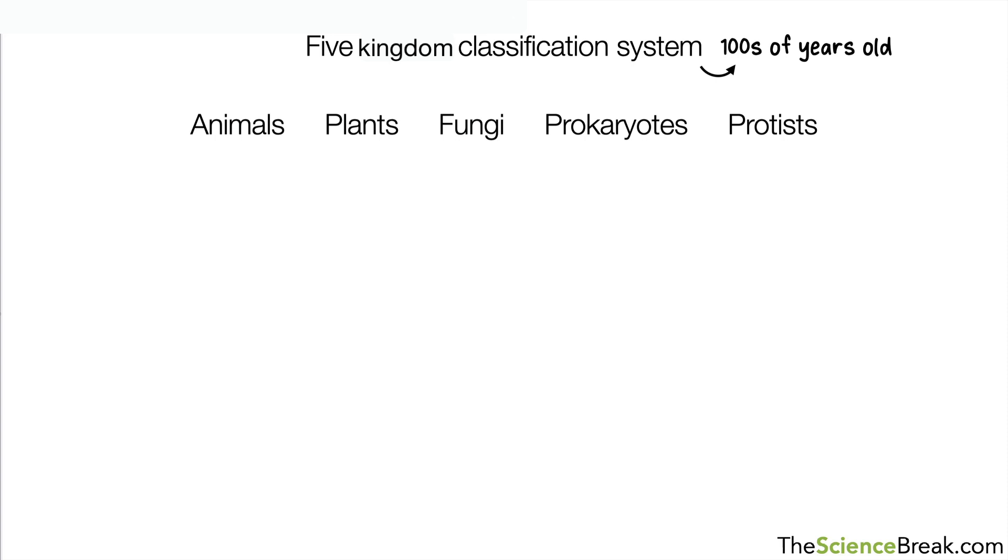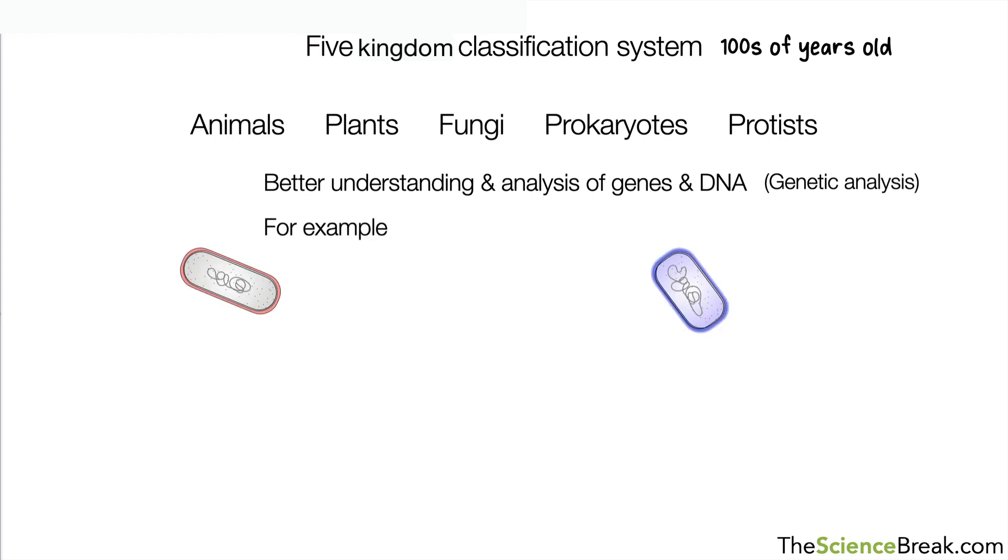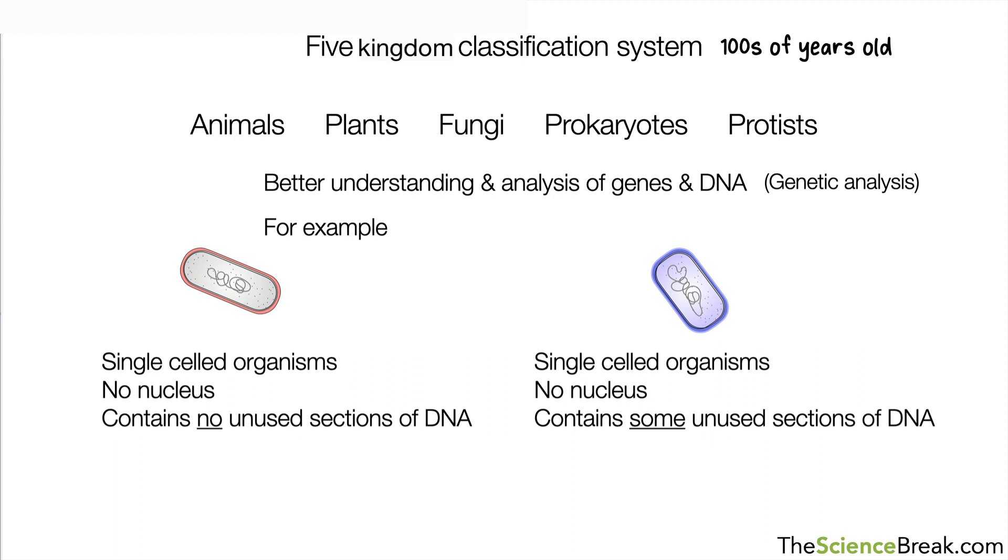What we have now is a better understanding and analysis of genes and DNA. We call this genetic analysis. And this has helped us understand living things and relationships better. For example, here are two single-celled organisms. The one on the left has no nucleus and contains no unused sections of DNA. And the one on the right contains some unused sections of DNA, and this is more like animals and plants than the other type of bacteria.